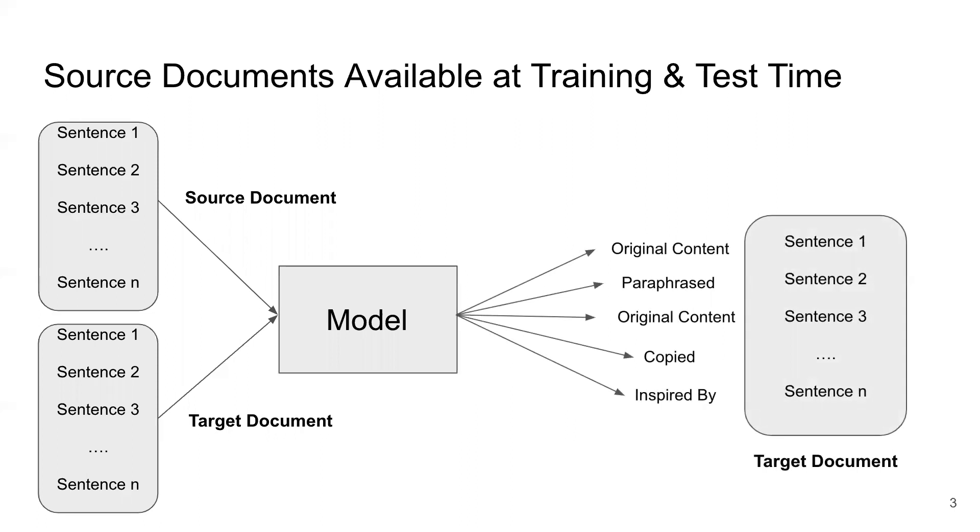Then the model outputs some sort of score or prediction for each of the target document sentences. These scores could range from the sentence being original content unrelated to the source to a paraphrase or a summary of the source or on to the other end, exact copying.